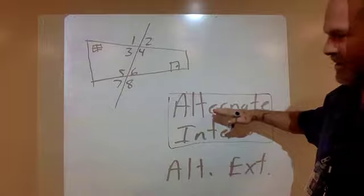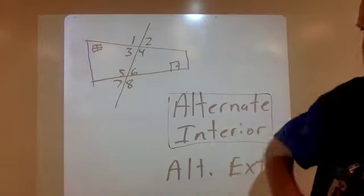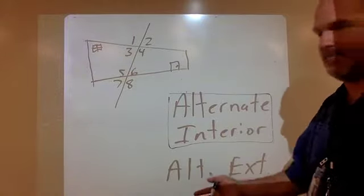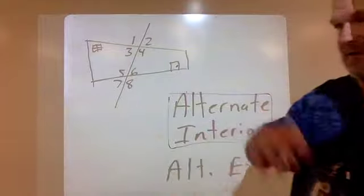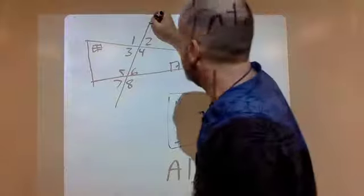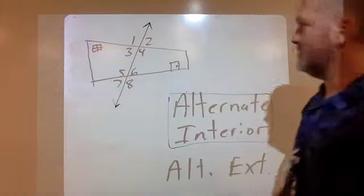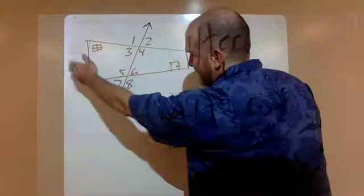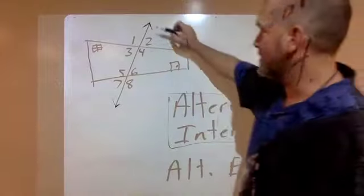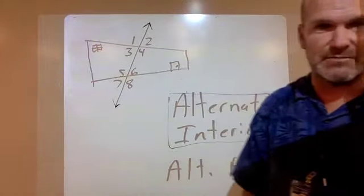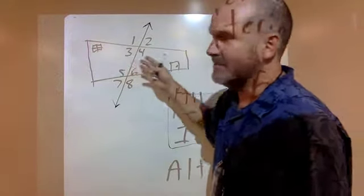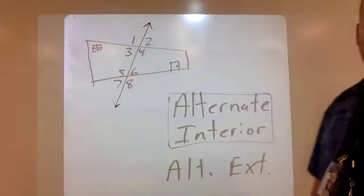Now we just have to deal with the word alternate, which means flip-flopping, every other. In this context, alternate means on the opposite sides of the transversal line. For example, angle 5 is on the left-hand side of the transversal and angle 6 is on the right-hand side. If you think of the transversal as a lightning bolt that split your house in half, you've got angles 4 and 6 on the right and angles 3 and 5 on the left — on the interior of your house.